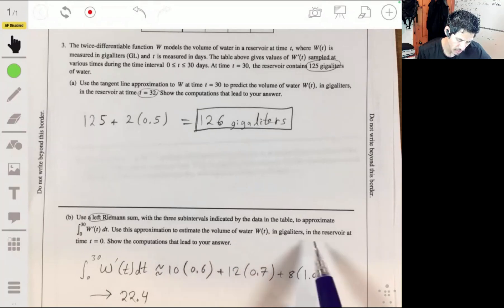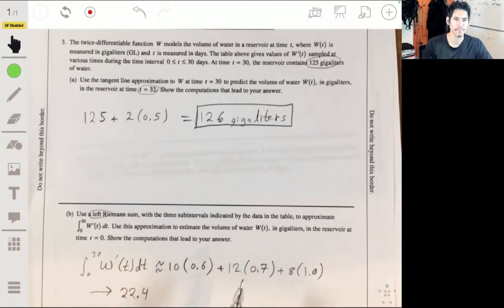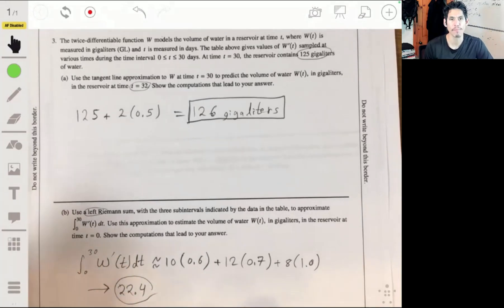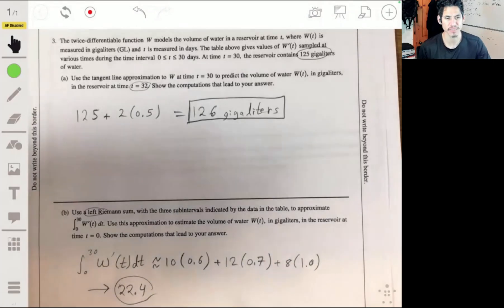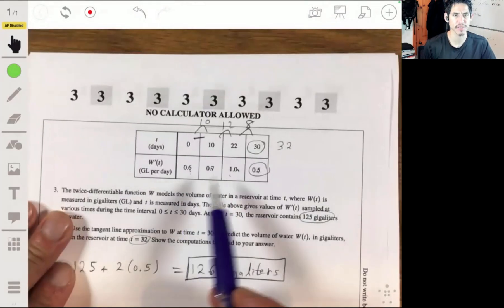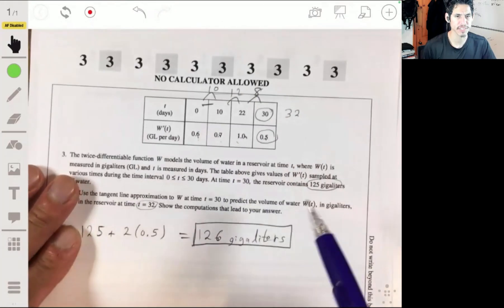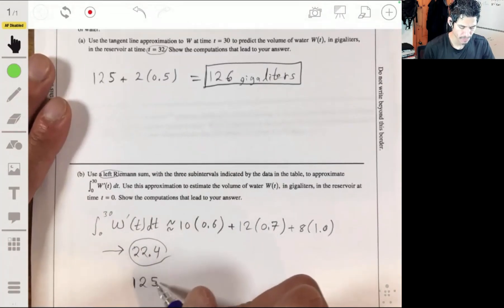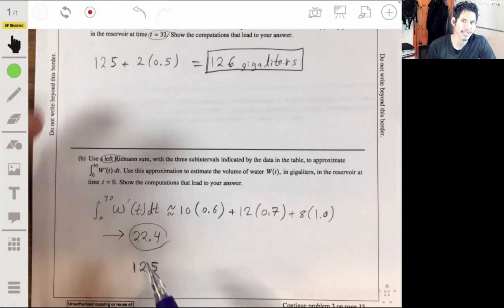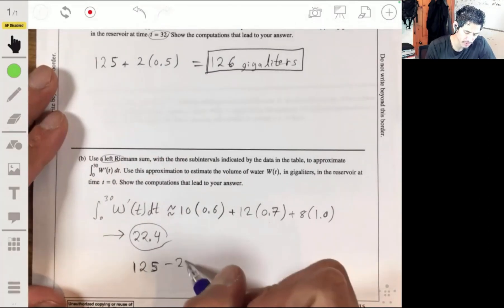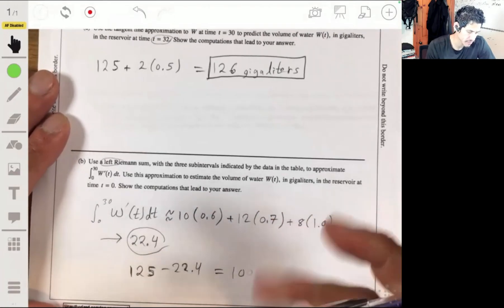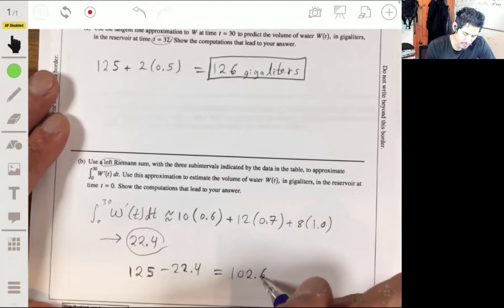Okay, so use the approximation. This is how much water was approximately added, or this is what we approximated to be the amount of water added over these 30 days. So, since it says on day 30, there's 125, that means we can figure out how many were at the start, or on day 0, by subtracting 22.4 from 125, and then we'll get 102.6. That's what our estimate's going to be, based on that, gigaliters.